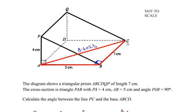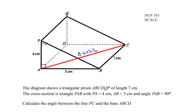Now using AC we are going to find the angle between the line PC and the base ABCD. So here it was the line PC and we had to find the angle between line PC and the base ABCD.